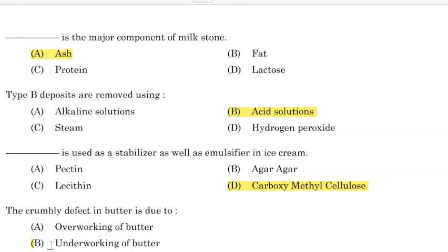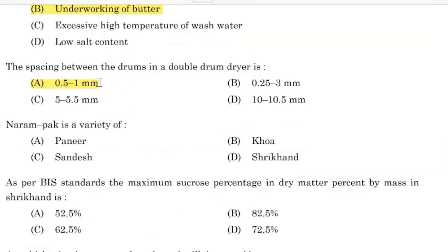The crumbly defect in butter is due to — Correct answer: Option B — underworking of butter. Narum pack is a variety of — Correct answer: Option C — Sandesh.